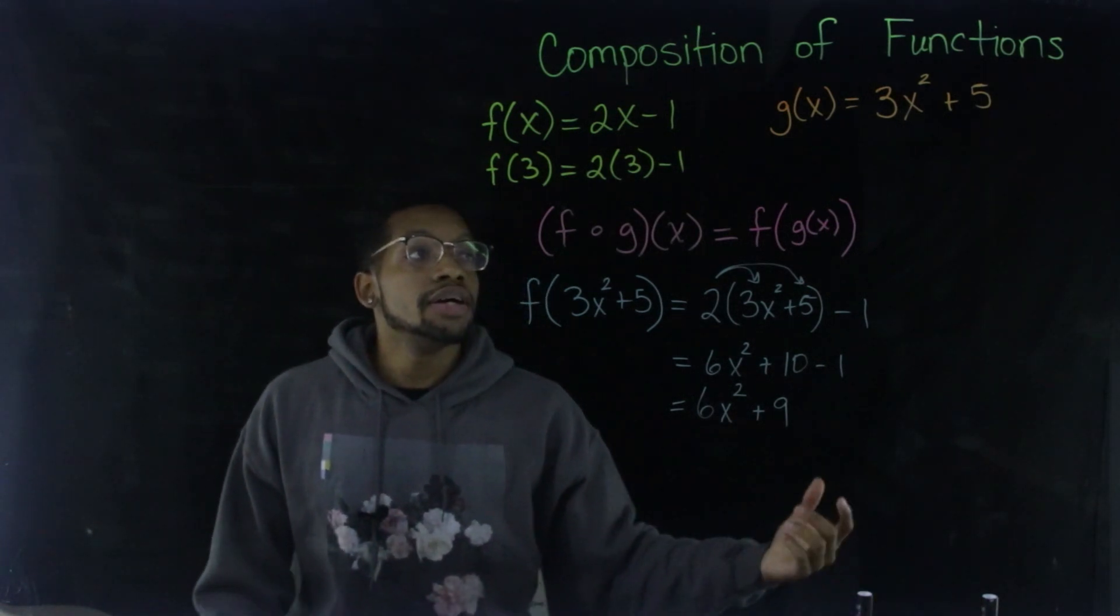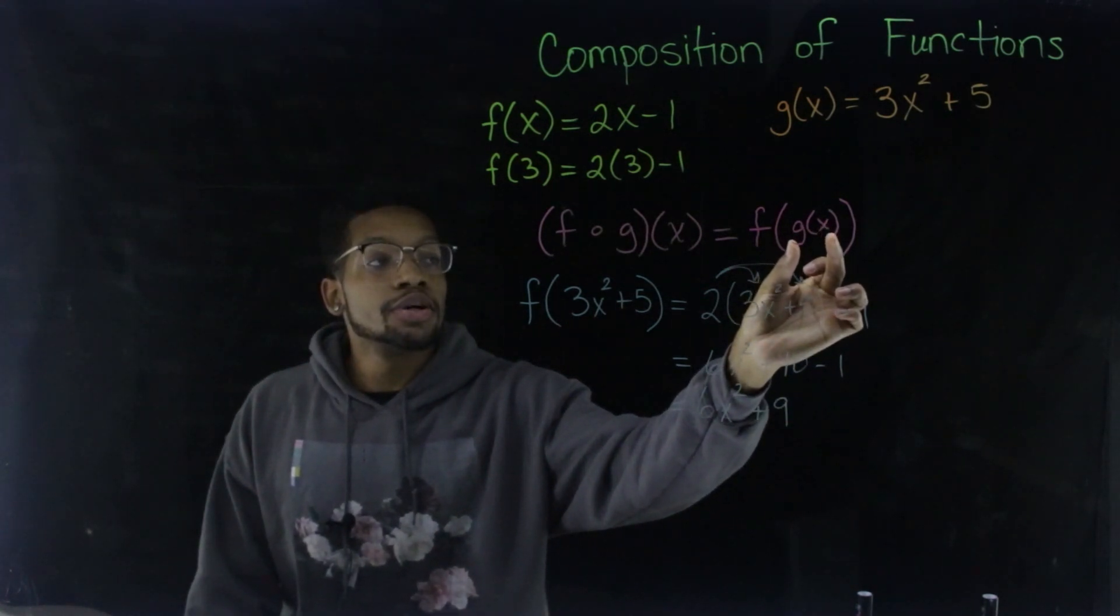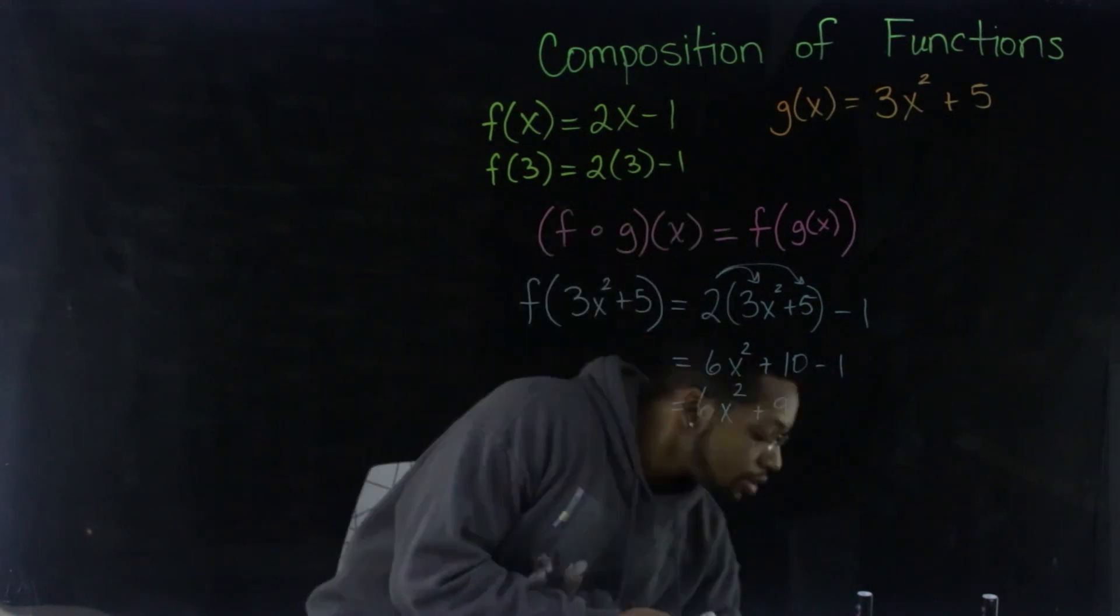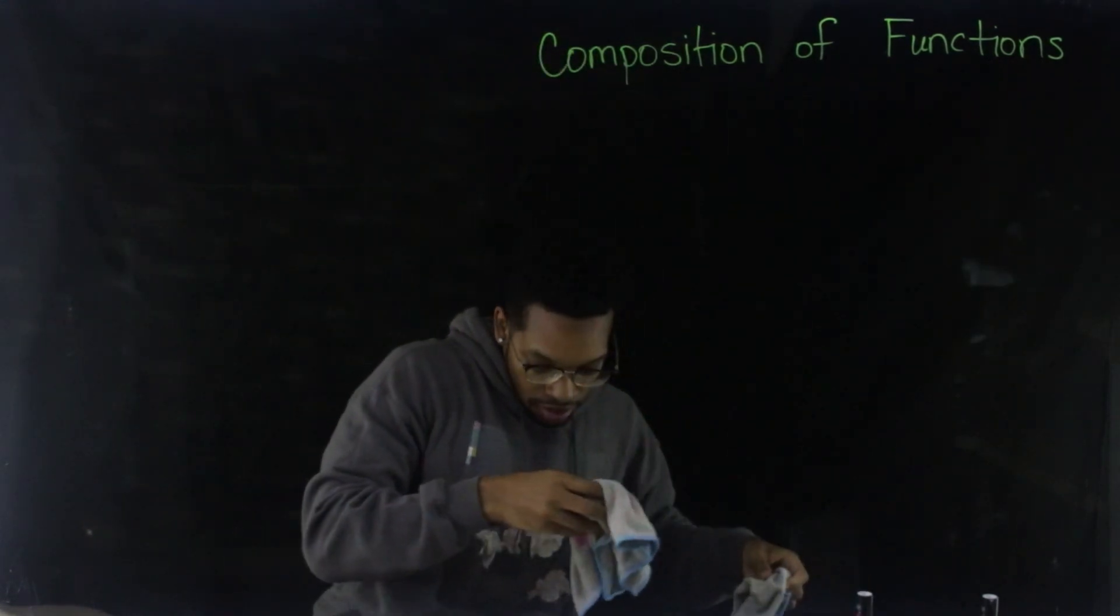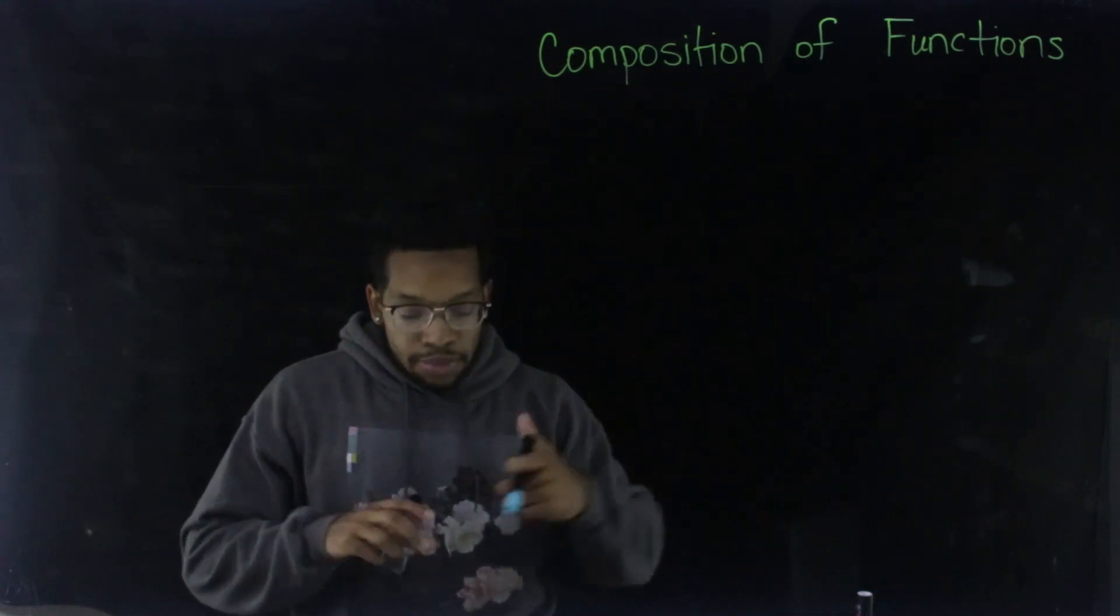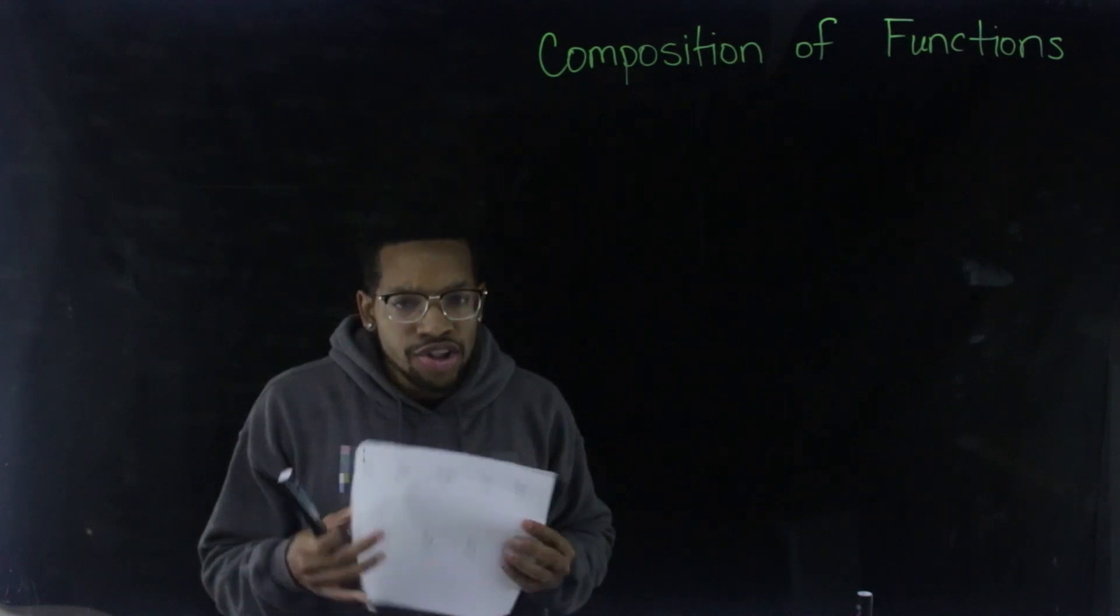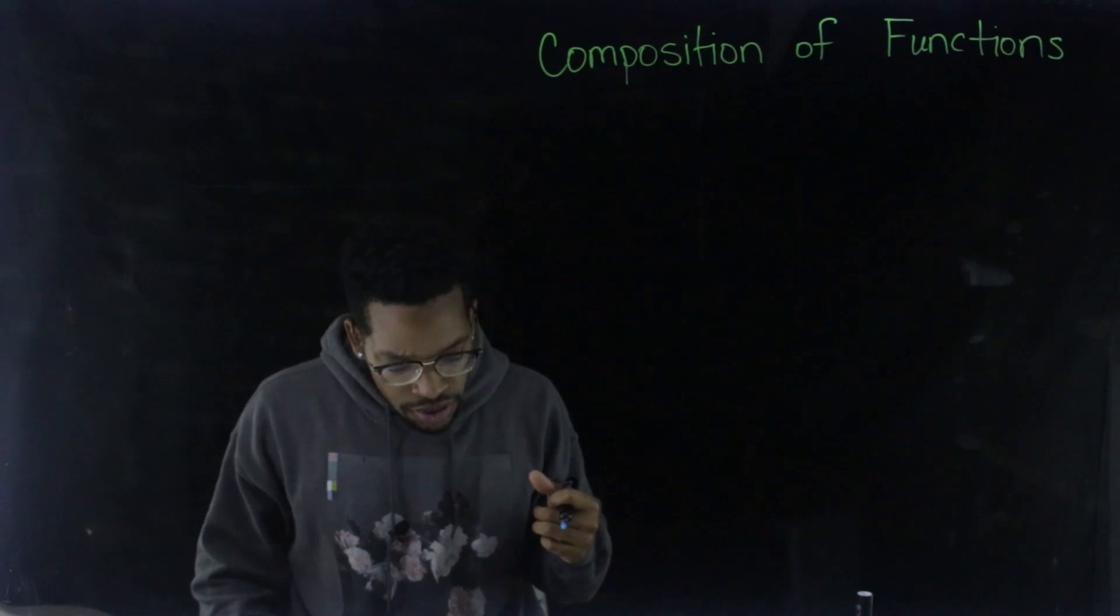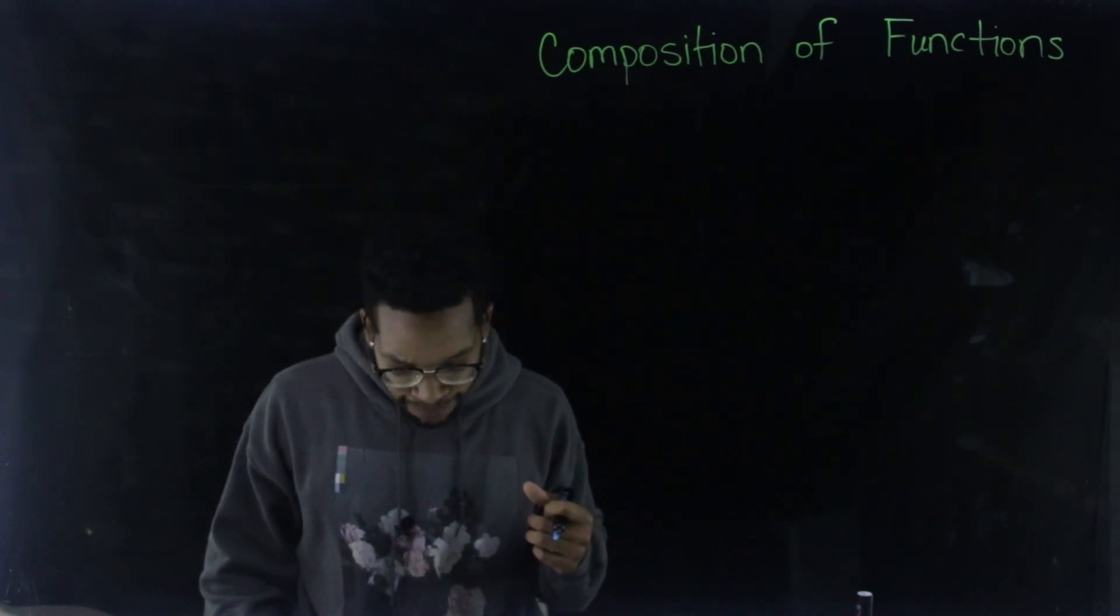So again, you have two functions instead of putting a letter as the input, you're going to put a function. So let's just do some more examples. All right, cool. So I'm going to set up the new examples and then we're going to solve them. And shout out to Janiah for the problems too. Clutch. All right. Let's do this.